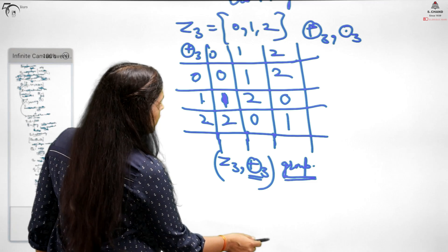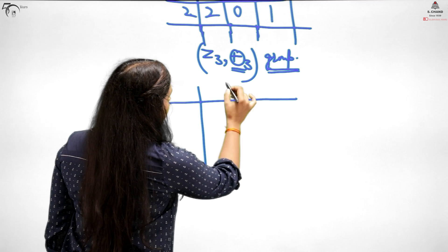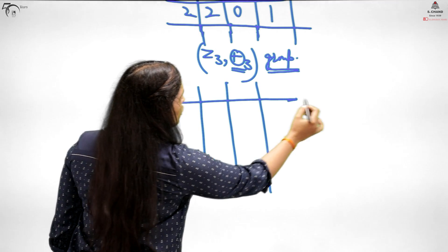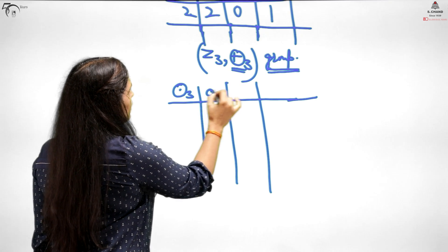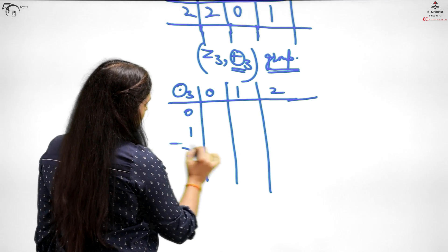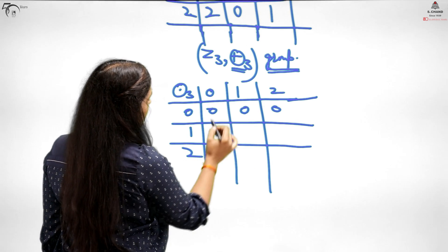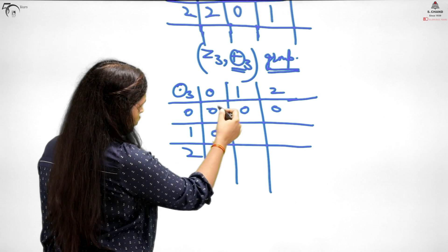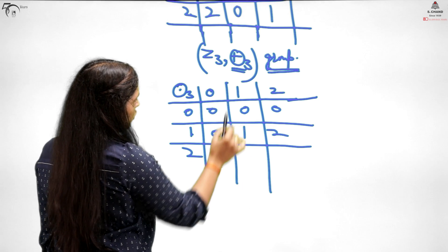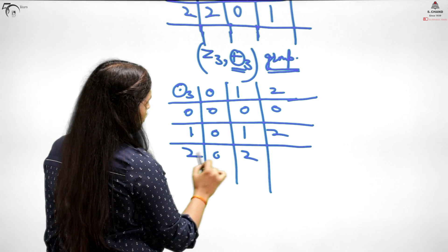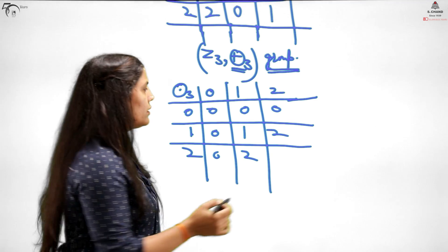Now let's take dot. With dot, I just have to check that when you multiply, you should only get 0, 1, 2, nothing beyond that, after considering the remainder. When I multiply by 0, the first row will be 0, 0, 0. Then 1 times 1 is 1, 1 times 2 is 2. Then 2 times 0 is 0, 2 times 1 is 2, 2 times 2 is 4, and when you divide you get remainder 1.